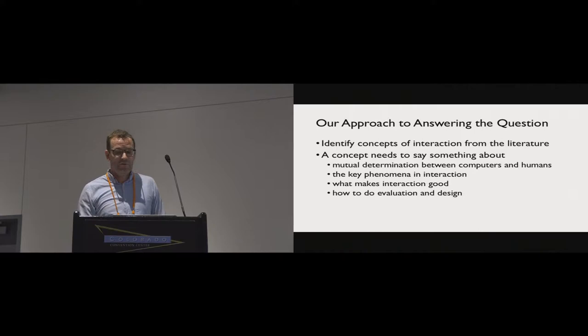So our approach to trying to answer this question is to identify concepts of interaction. And the way we think about it is that a concept of interaction needs to say something substantial about the interplay or mutual determination, we will get back to that, that happens between humans and computers. So it's really important that it tries to go beyond this folk notion of interaction. Then it needs to say something about or help us see what are the key phenomena in interaction. It needs to say something about what is good interaction. And then these concepts need to use all of that to show us how we can drive evaluation and design.